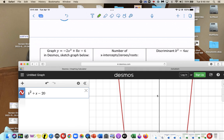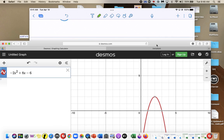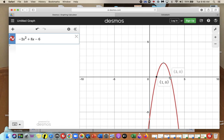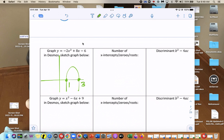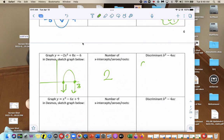So negative 2x squared plus 8x minus 6. Let's sketch that graph. So at 1 and 3. So here's what the graph looks like. At 1 and 3, there are two answers. And what's the discriminant?